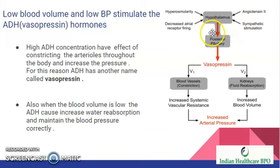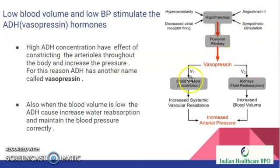In this diagram we can see that the hypothalamus stimulates the posterior pituitary to produce vasopressin. Vasopressin acts on blood vessels to cause constriction, resulting in increased systemic vascular resistance so that blood pressure increases. Vasopressin also acts on the kidney tubules, causing fluid reabsorption so that blood volume increases.